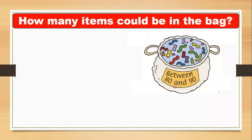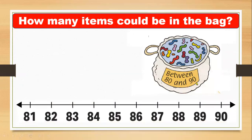Again, we have two tens, 80 and 90. You will find a number that comes between 80 and 90. It's your choice - choose a number. How many items could be in the bag? You will not find the exact number. I'm going to choose 83. Between 70 and 80, I'm going to choose 77.